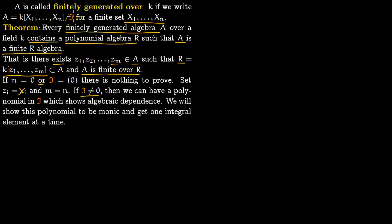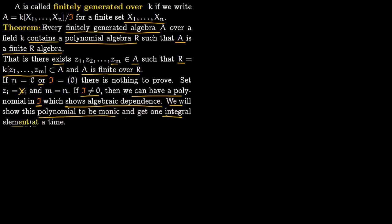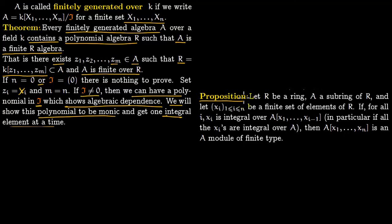If the ideal is non-zero, it contains some polynomial F. When we mod out by this polynomial it becomes 0 in A, showing algebraic dependence. This algebraic dependence gives us an element which will be integral. We show the polynomial is monic, which gives integral elements, and integral elements give us the finite R-algebra. We recall the relevant proposition from the lecture on transitivity of integral elements.